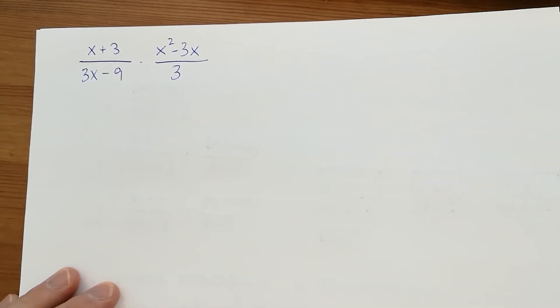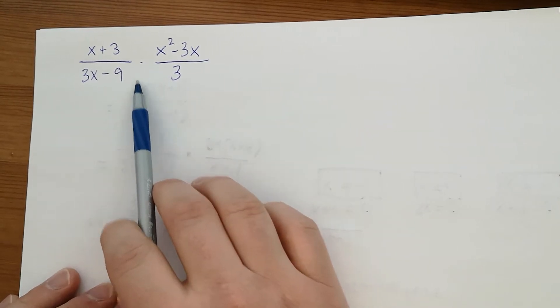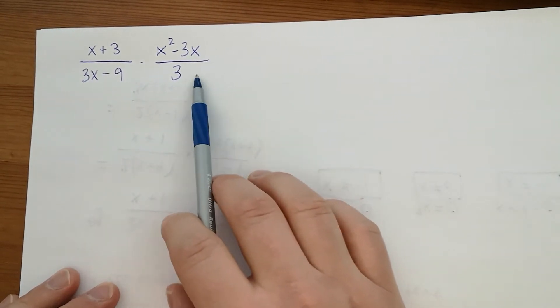All right, I've got another example set up for us. It's (x+3)/(3x-9) times (x²-3x)/3.